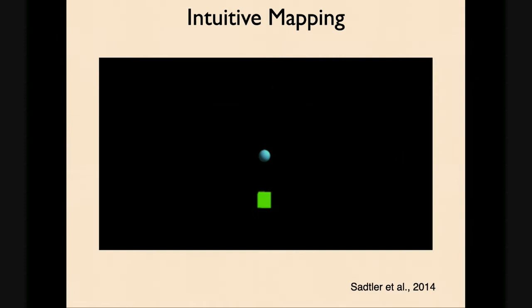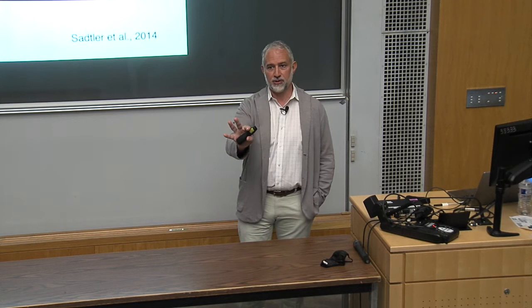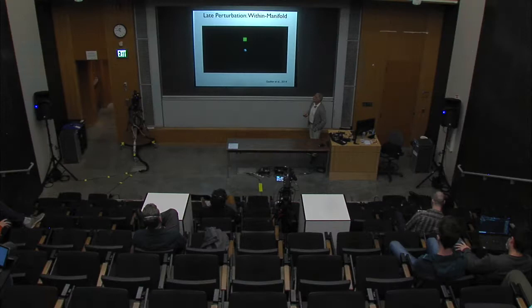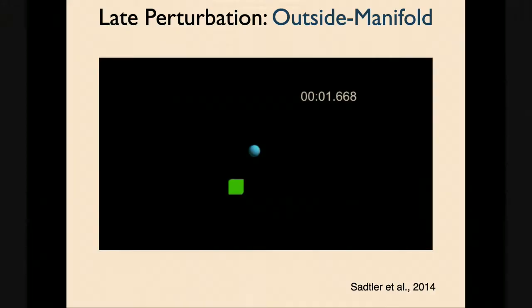We try to answer that question by first defining a low-dimensional subspace that captures the variance we see in population activity — a technique Byron Yu developed with Manish Sahani and Krishna Shenoy. It turns out that for 90 neurons, we find about 10-dimensional structure using factor analysis. We call it the intrinsic manifold. When we give the animal a new BCI mapping that's within the intrinsic manifold, our prediction is that it will be learnable. When we give the animal a new mapping that's outside of the manifold, our prediction is that this would be difficult to learn because it involves the creation of new patterns of neural activity that he didn't already experience.